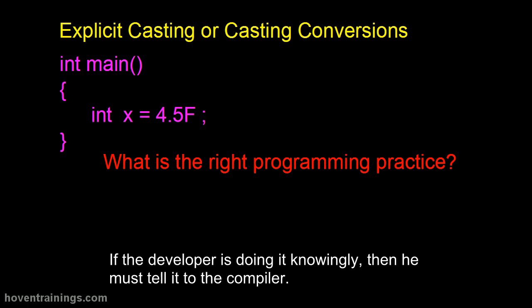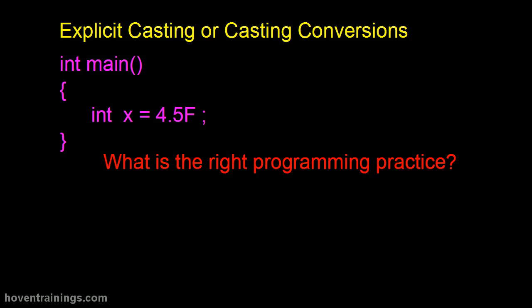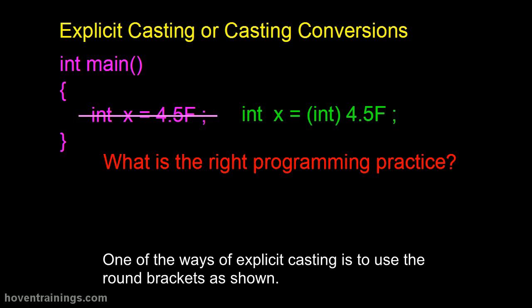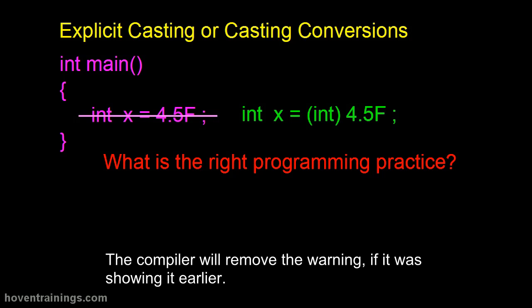If the developer is doing it knowingly, then he must tell it to the compiler. C++ has a concept of an explicit cast for doing this. An explicit cast is the opposite of an automatic conversion. One of the ways of explicit casting is to use the round brackets as shown. The compiler will remove the warning, if it was showing it earlier.